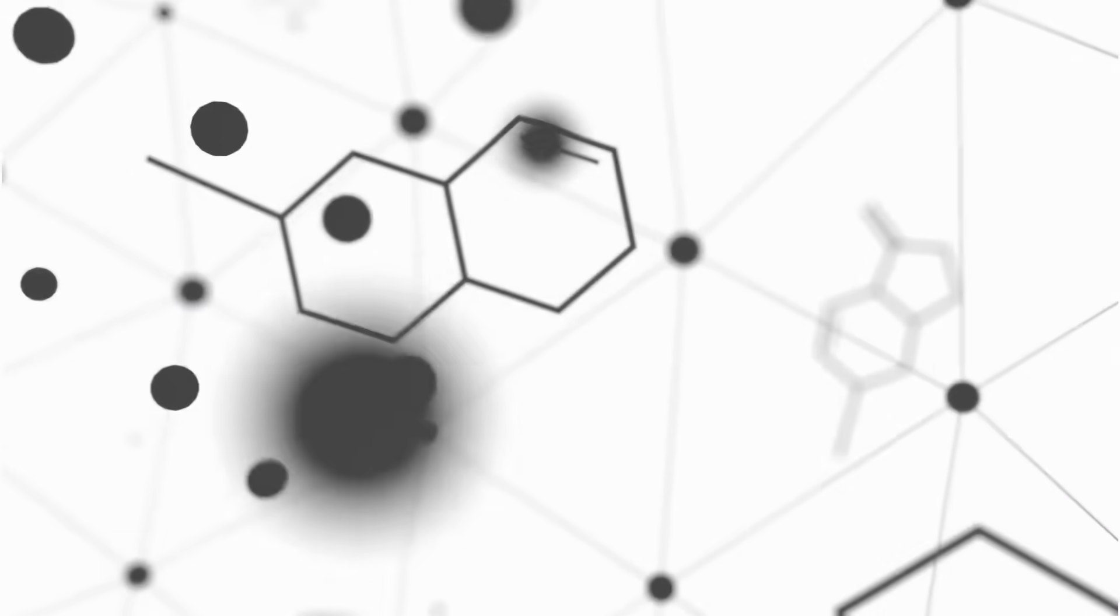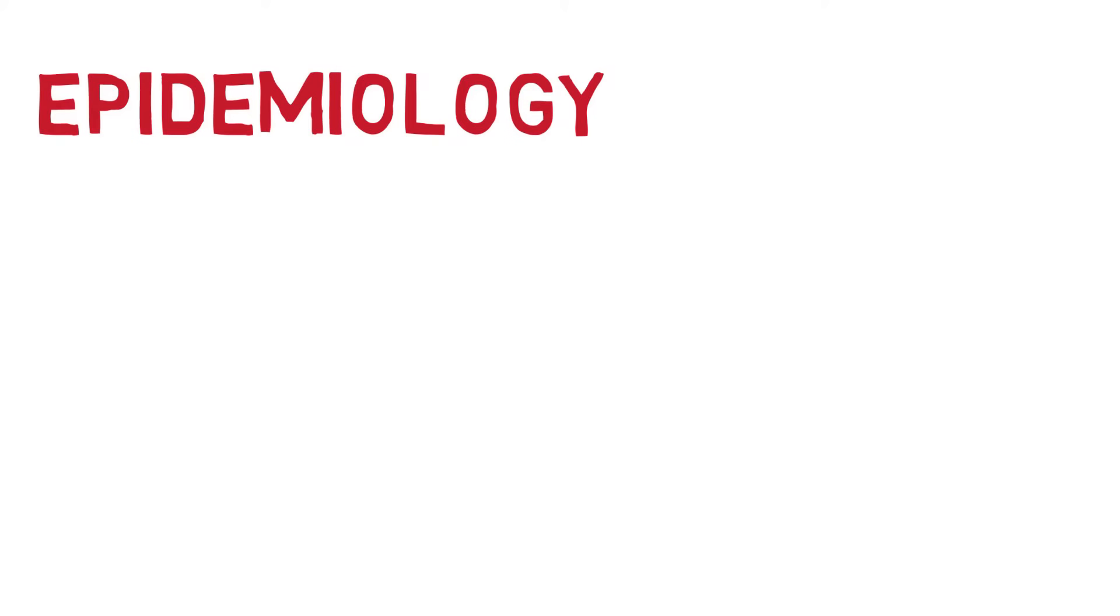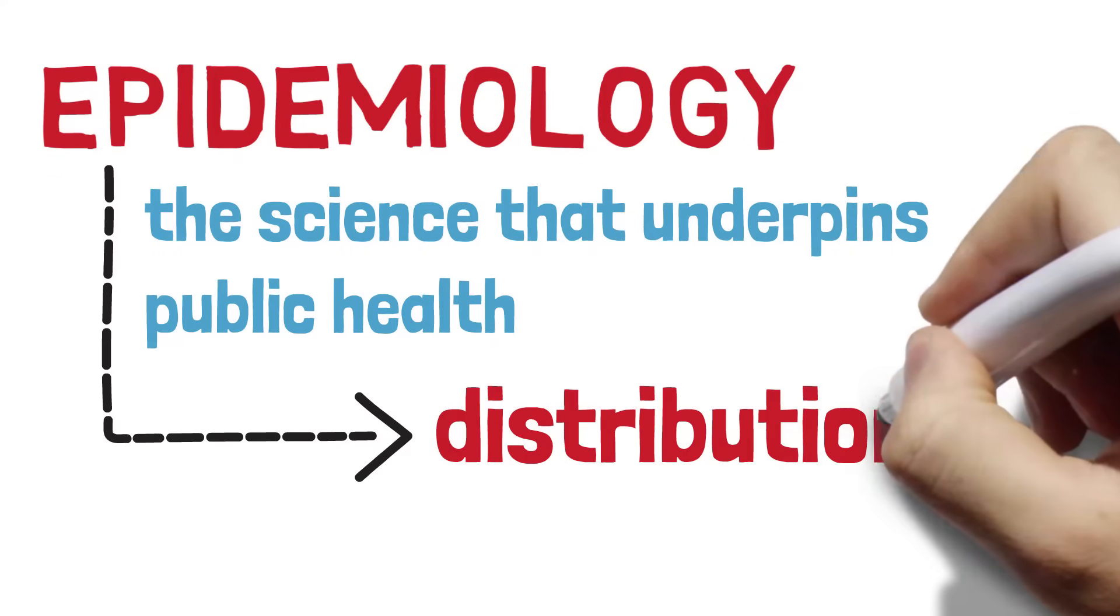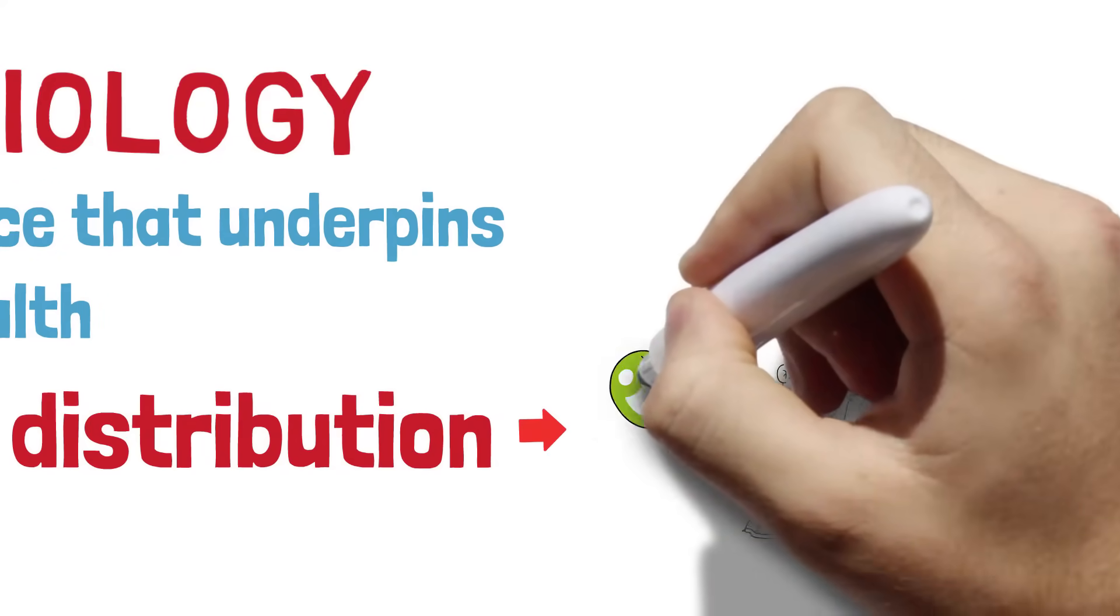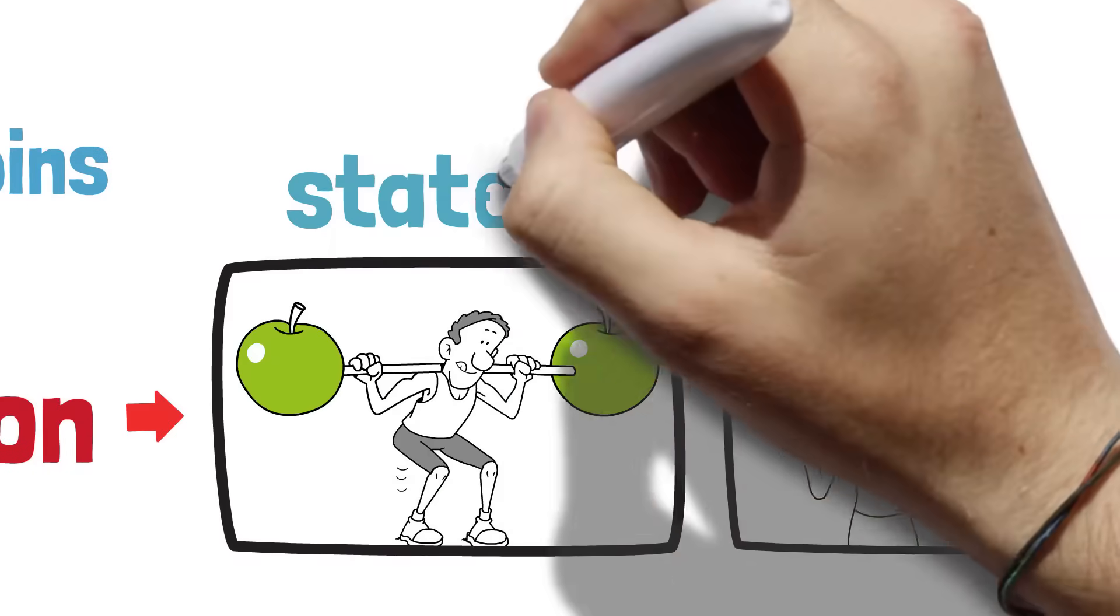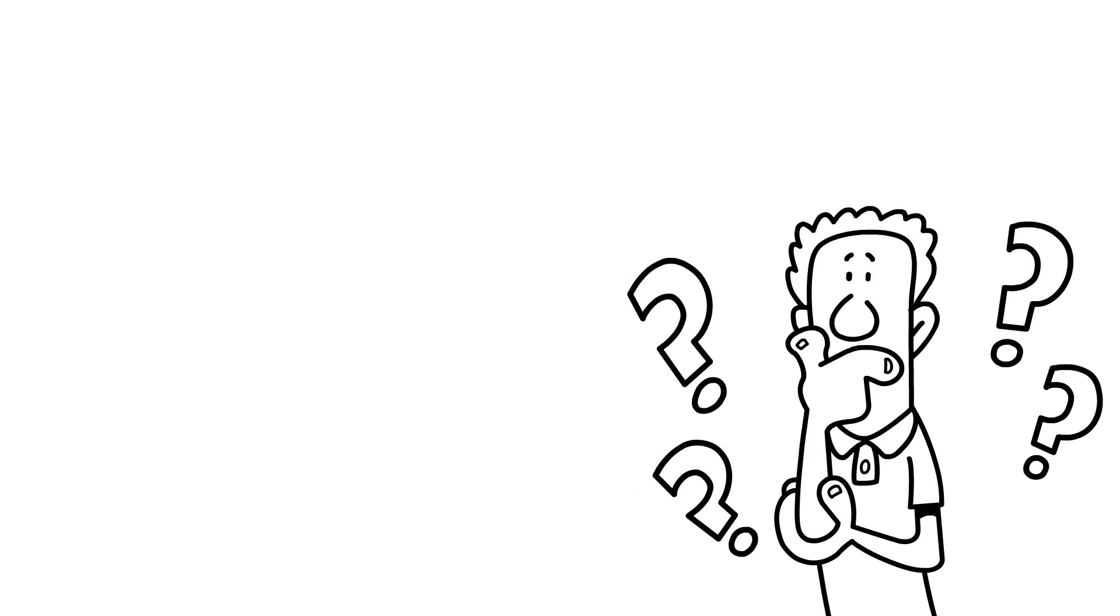Firstly, there are the sciences that underpin public health. And first and foremost amongst these is epidemiology. In my opinion, epidemiology is the science that underpins public health. It's the study of the distribution of states of health and the distribution of drivers that cause those states of health and the causative relationship between the two. All of public health is built on a foundation of epidemiology. So if you learn nothing else, make sure that you learn your epi.